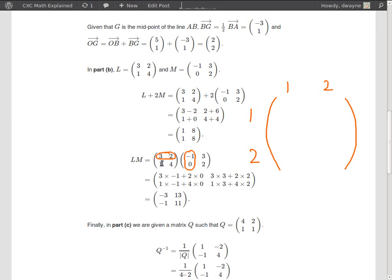So we perform a row by column multiplication of the first row in the first matrix by the first column in the second matrix. So that's 3 by negative 1 which is negative 3 plus 2 by 0 which is 0. So negative 3 plus 0 is negative 3.